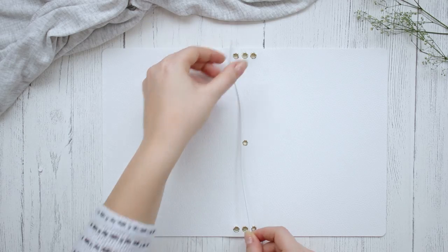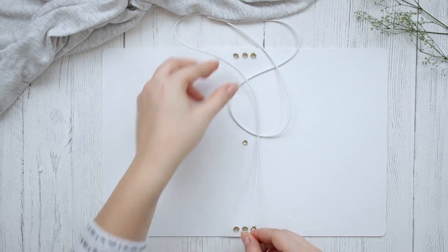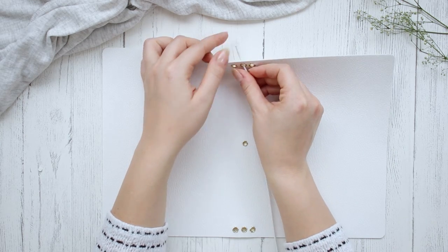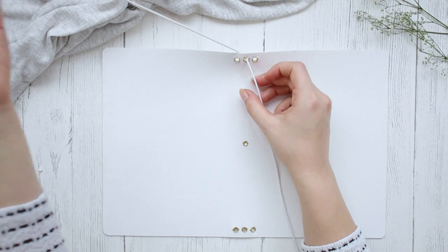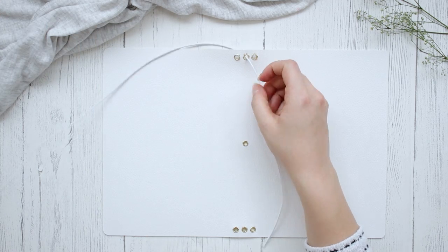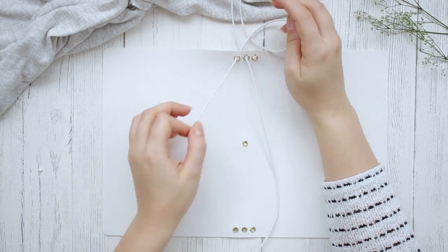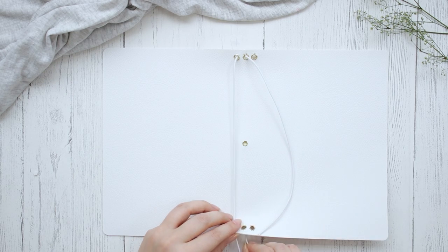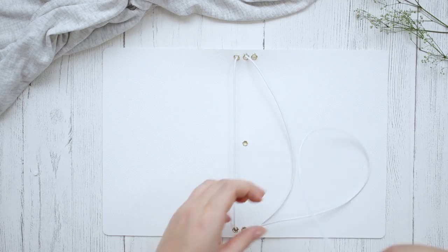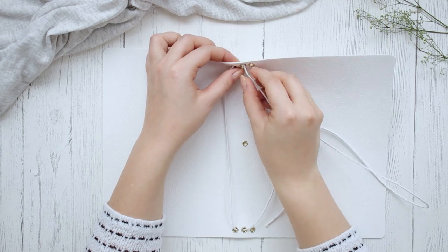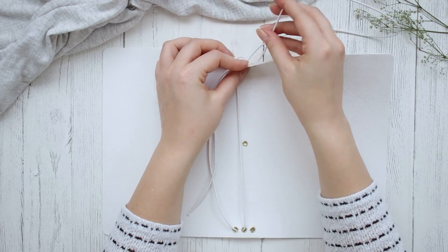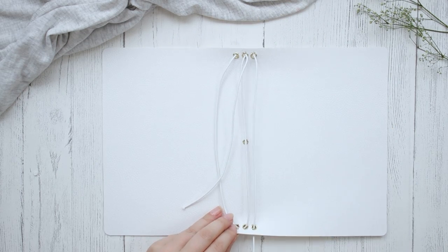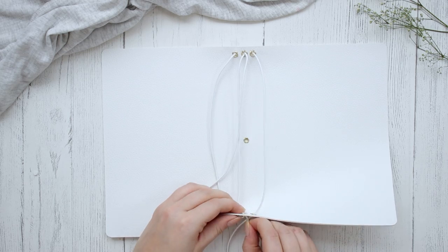Next it's time to add the elastic, so measure about 5 times the height of the notebook just to be sure. With the inside of the cover facing you, feed the elastic through the top middle hole and pull it through. Then go through the left down to the bottom. Next, insert the elastic through the bottom center and then all the way through the top center once again. Finally, go through the top right hole all the way down to the bottom right and then bring it through the bottom center.